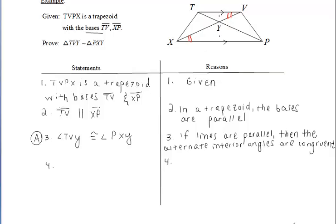You can also list the other pair of alternate interior angles, but I'm going to go a different route, and I'm just going to list the vertical angles that are congruent here, those yellow ones.